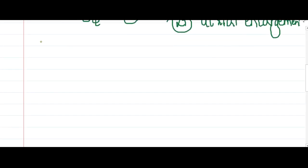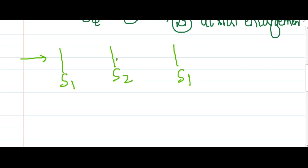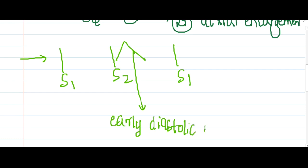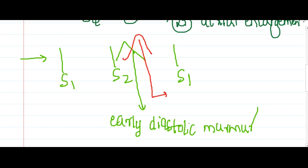The murmur seen in aortic regurgitation is mainly in diastole. The first murmur is an early diastolic murmur due to blood flowing from the aorta back into the left ventricle. There is also a mid-diastolic murmur called the Austin Flint murmur.